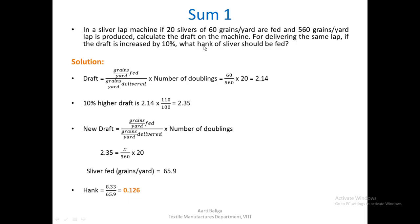Since we have been asked for the hank of the sliver to be fed, we convert using the formula: hank = 8.33 ÷ 65.9, which gives a hank of 0.126.